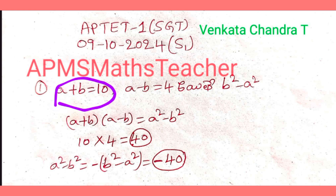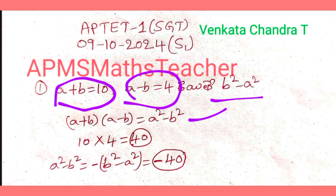A plus B is equal to 10, A minus B is equal to 4, and we need to find B square minus A square. We have a formula for algebraic polynomials: A plus B into A minus B equals A square minus B square. But here it is B square minus A square.